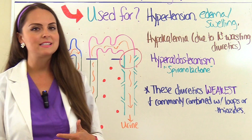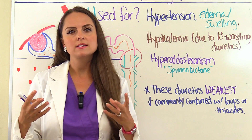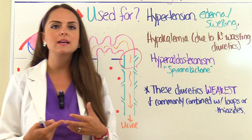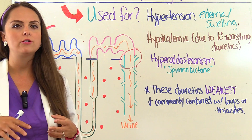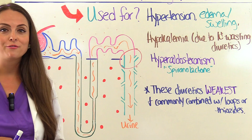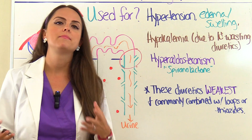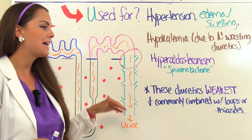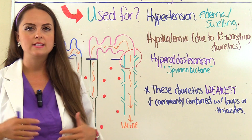One thing to note is that potassium sparing diuretics tend to be the weakest in their diuretic effects compared to loop diuretics and thiazides, because they don't have as profound an effect on decreasing sodium reabsorption. Loop diuretics are very powerful because they target a part of the nephron that plays a huge role in reabsorbing lots of sodium. This is why potassium sparing diuretics are often combined with either a loop diuretic or a thiazide diuretic.